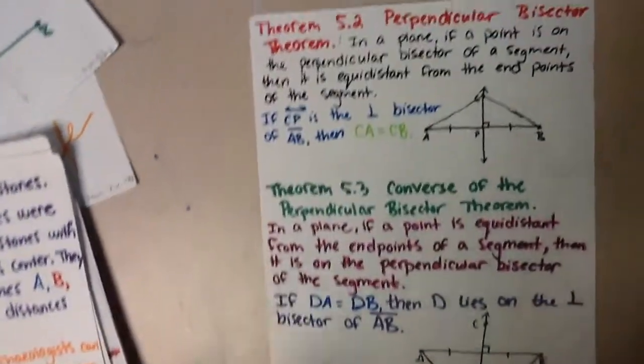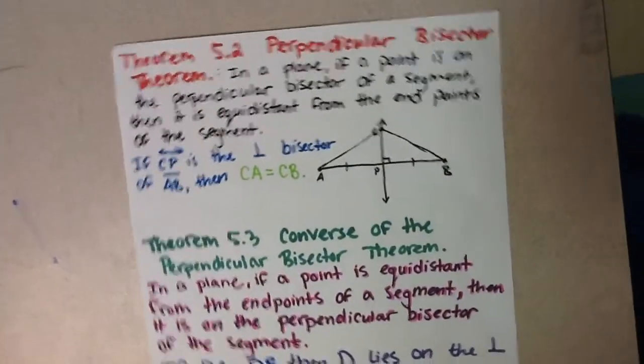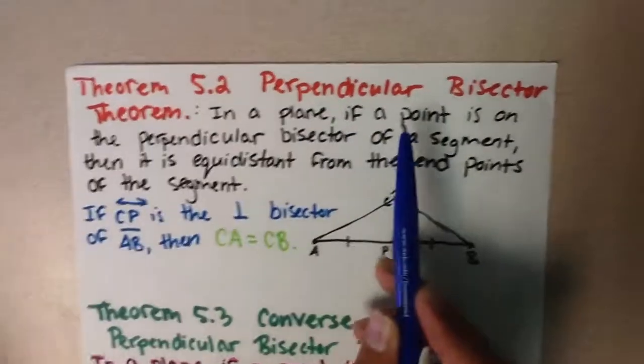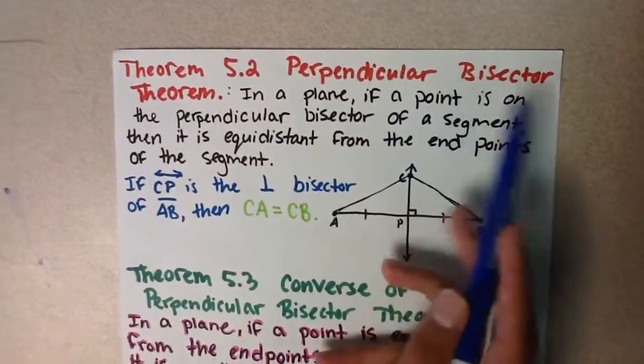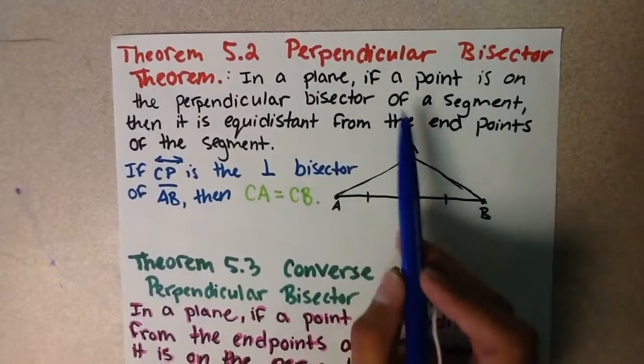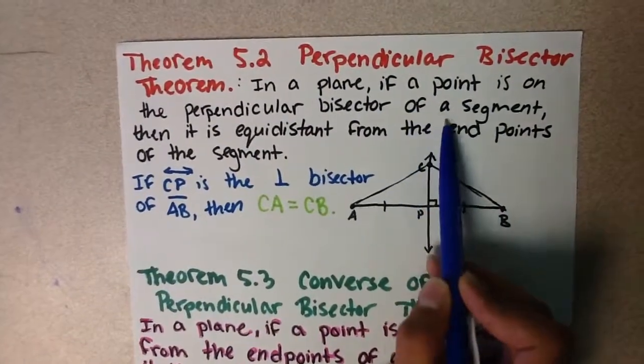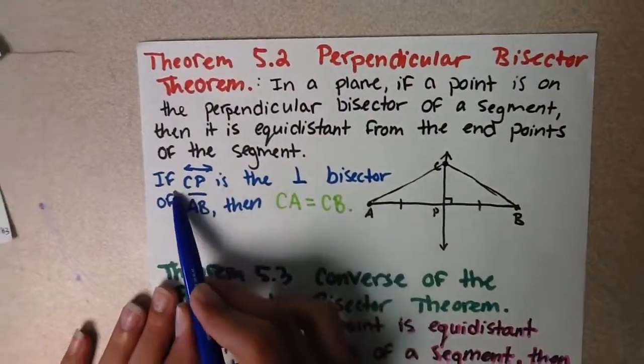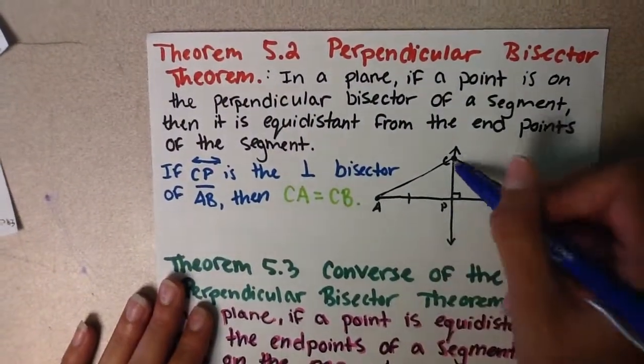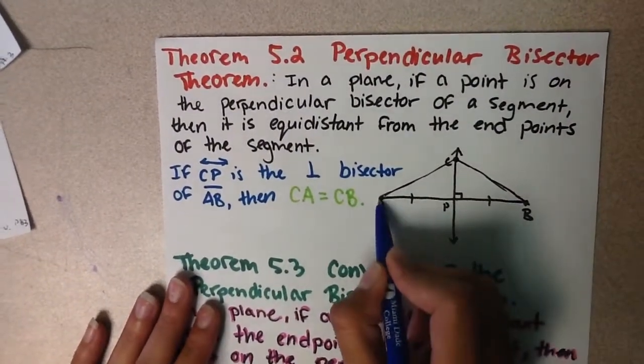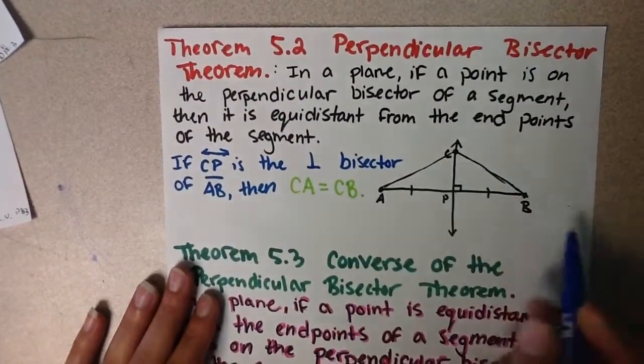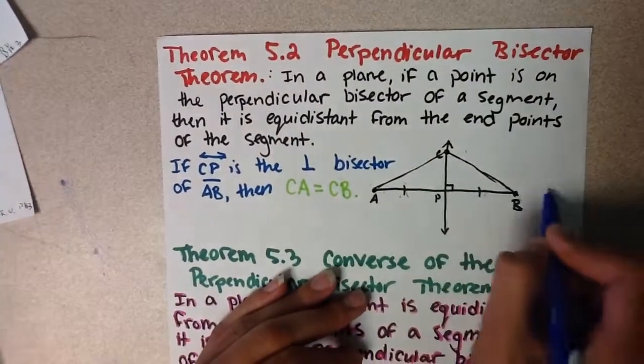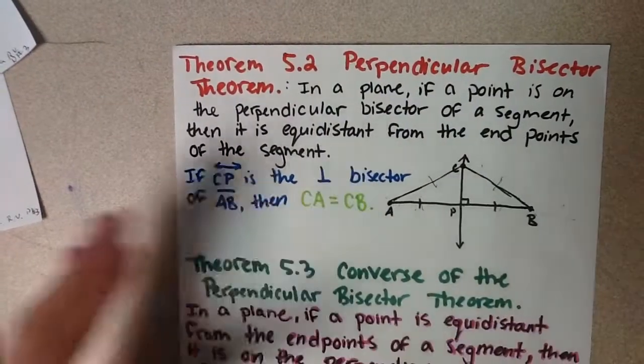There are approximately three theorems in here, and these are the first two. Theorem 5.2 states the perpendicular bisector theorem: In a plane, if a point is on the perpendicular bisector of a segment, then it is equidistant from the endpoints of the segment. If line CP is a bisector of line segment AB, then CA is going to equal CB, because this is equidistant from each other.